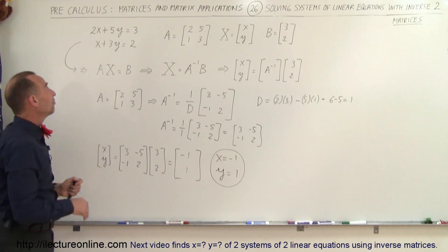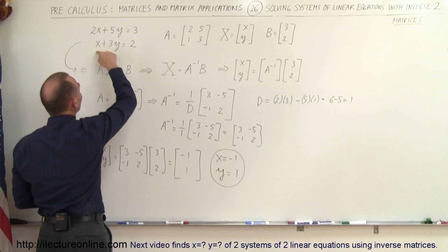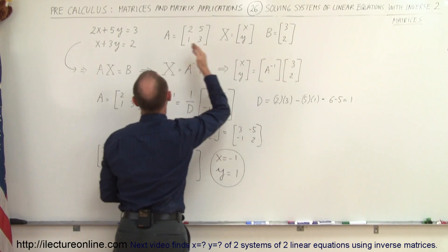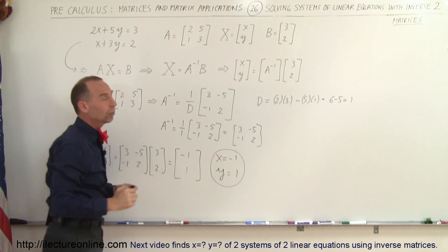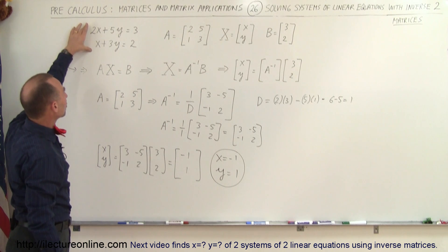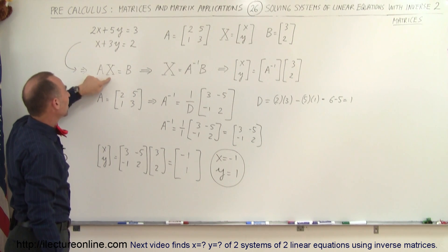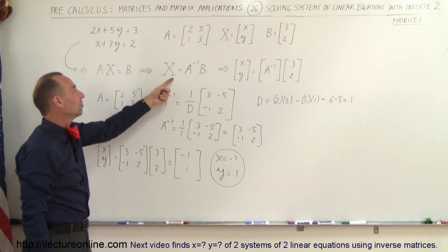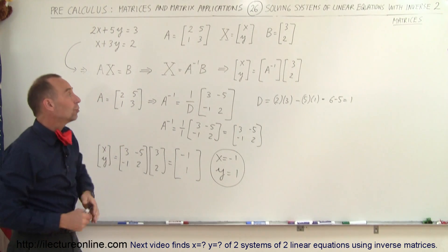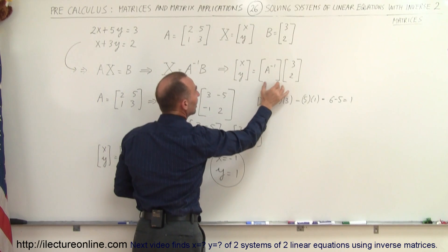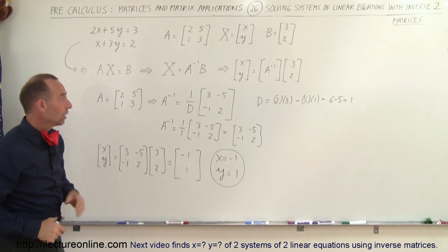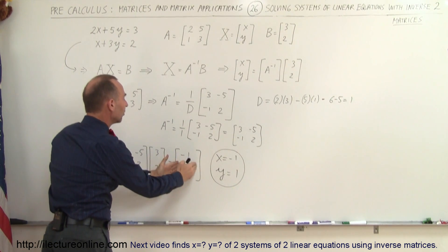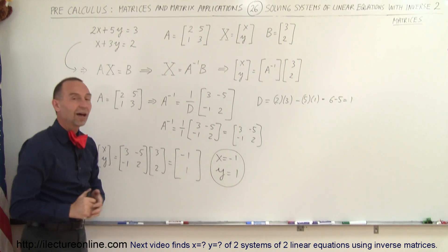Quick review: if you have a system of linear equations, you create a matrix of the coefficients of the variables, a matrix of the variables, and a third matrix of the constants to the right of the equal sign. The system can be written as A times X equals B, and you solve for X by computing the inverse of A times B. Find the inverse of matrix A, multiply times B, and that gives you the solutions for x and y.